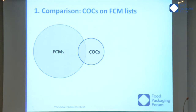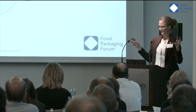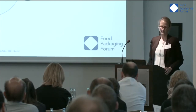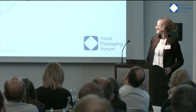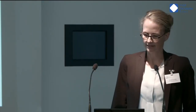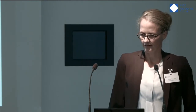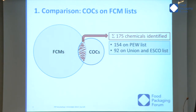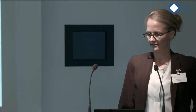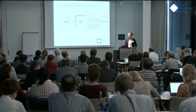We compared each FCM list with each chemicals-of-concern list. There were many more FCM chemicals and fewer COCs. The intersection of these two groups showed that there are 175 chemicals that are on at least one of the FCM lists and at the same time on one of the COC lists. Of these 175, 154 are on the Pew list and 92 are on the Union and ESCO lists, so they are used in Europe. Then 119 are on the TEDx list and 69 are on the SIN list.